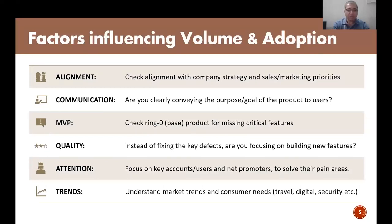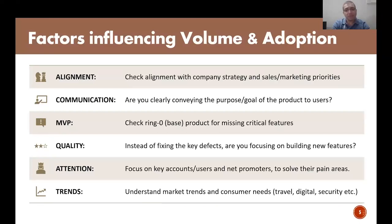Let's start with parameters that impact your volume. I would start with alignment — how is your product aligned with your company's goals, strategy, and your sales and marketing priorities? Unless your product goals are rightly aligned with your company and sales and marketing, they may end up talking about something else, because their goals and your goals are different. Sales and marketing might be getting incentives on something else, and what they are selling might be different from what you want to sell. So please derive the right level of alignment as much as possible.